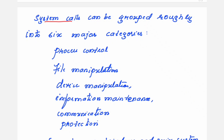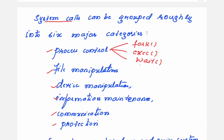System calls are grouped roughly into six categories: process control, file manipulation, device manipulation, information maintenance, communication, and protection. In this session, whatever I am explaining is about the process control system calls — fork, wait, and exec. I will also give you demo programs showing how to use these in your user program to get the services the user needs.